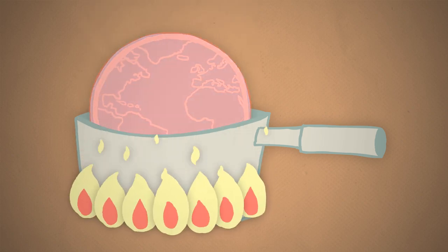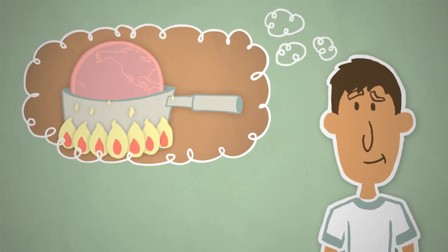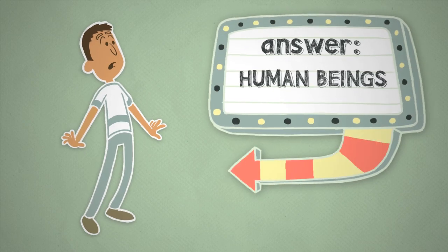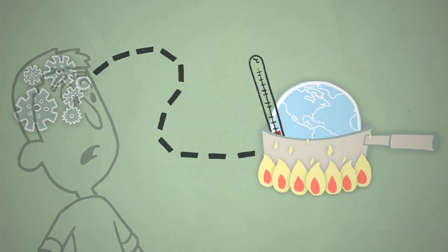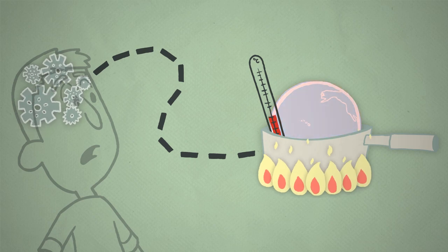We already know that rapid climate change is happening, but how bad could it get? The answer lies with us, human beings. That's because the decisions we make now will determine if the effects of rapid climate change are mild or extreme.